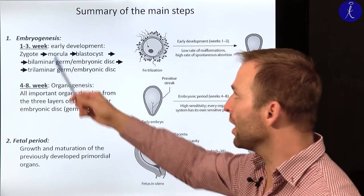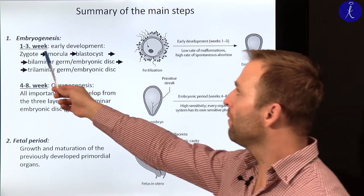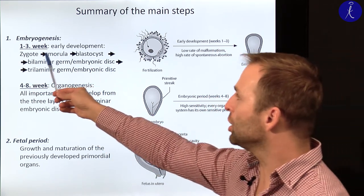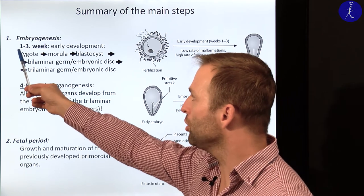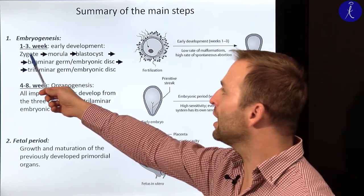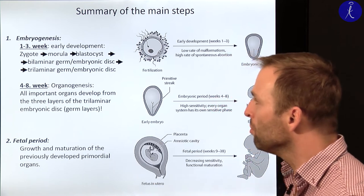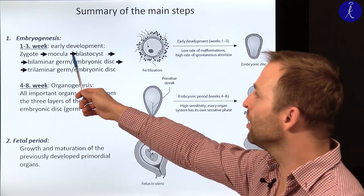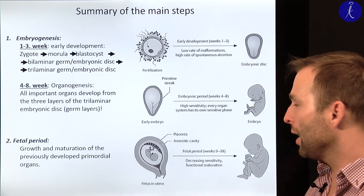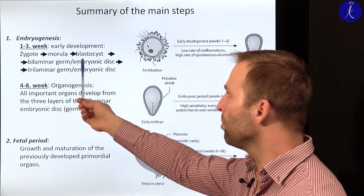The first phase is called embryogenesis, which is further divided into two parts. The first three weeks are called early development. After fertilization you have the zygote, a one-cell organism, which then starts to divide into a multicellular organism called the morula. After the morula is made, the inner cells start to shrink, a cavity forms inside, and at this stage it is called the blastocyst.